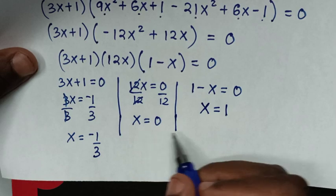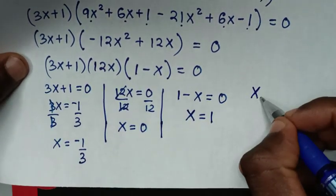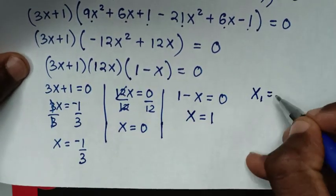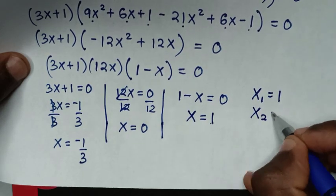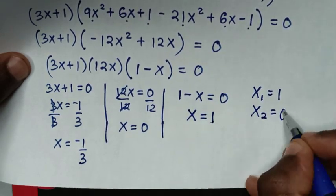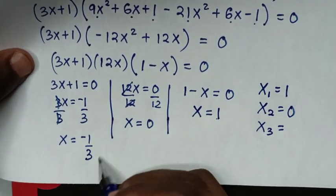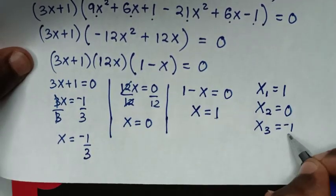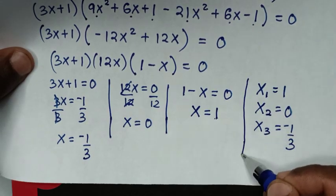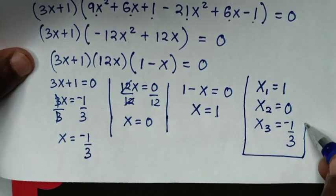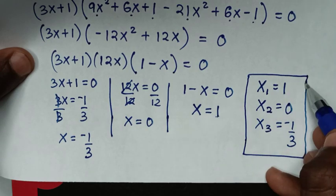So we have three values of x. The first value is x equals 1, the second value is x equals 0, and the third value is x equals negative 1 over 3. These are all the values of x in this problem.